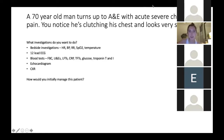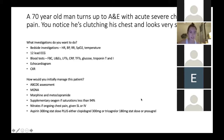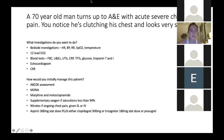How would you initially manage this patient? You do an ABCDE assessment — airway, breathing, circulation, GCS, and everything else. Then initially: morphine and metoclopramide, supplementary oxygen if they need it, nitrates if there's ongoing chest pain (given either sublingually or intravenously), and then aspirin 300mg stat dose plus either clopidogrel or ticagrelor. You can learn this through the MONA acronym: morphine, oxygen, nitrates, and aspirin plus clopidogrel. If you have that system in mind, you will definitely get it right.